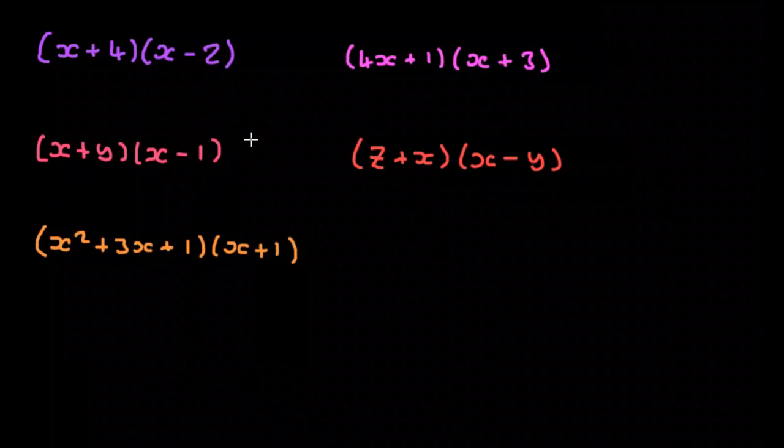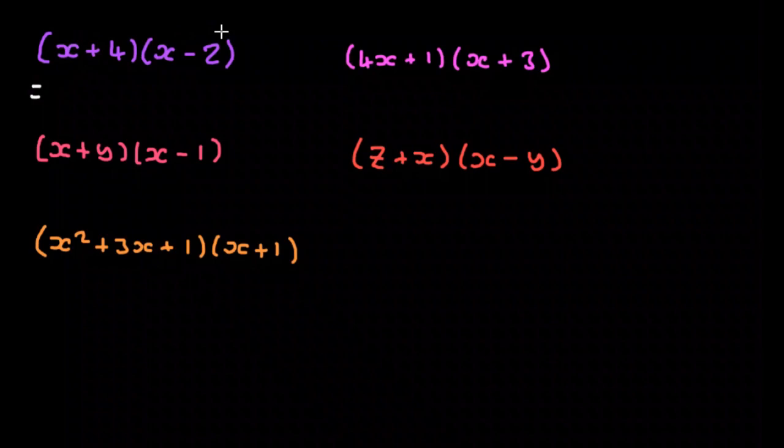We're going to look at expanding brackets and the way we do this. Take an example of this first one: we start with one of the terms and then multiply that with all the terms from the other bracket, and when we've done that, we move to the next term in the first bracket and repeat the same process.